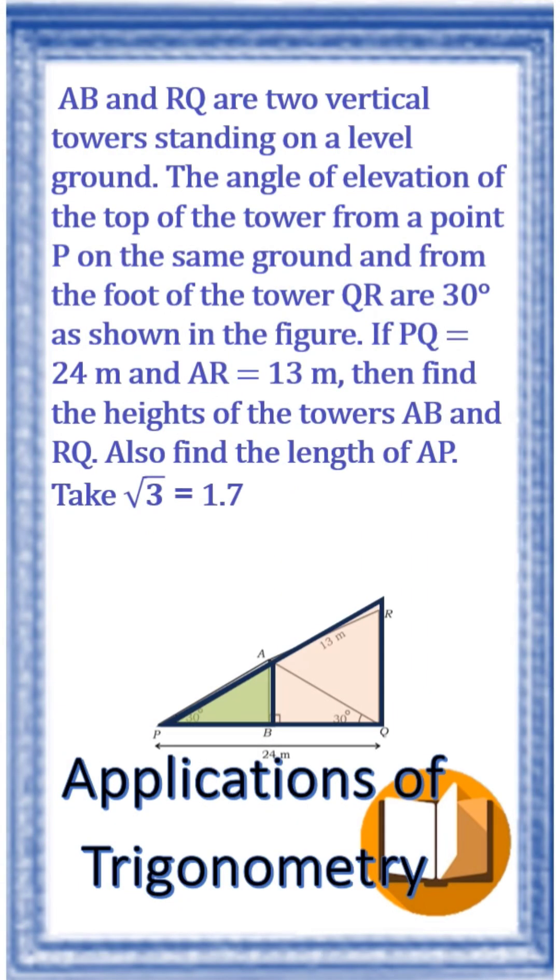AB and RQ are two vertical towers standing on a level ground. The angle of elevation of the top of the tower from a point P on the same ground and from the foot of the tower QR are 30 degrees as shown in the figure.